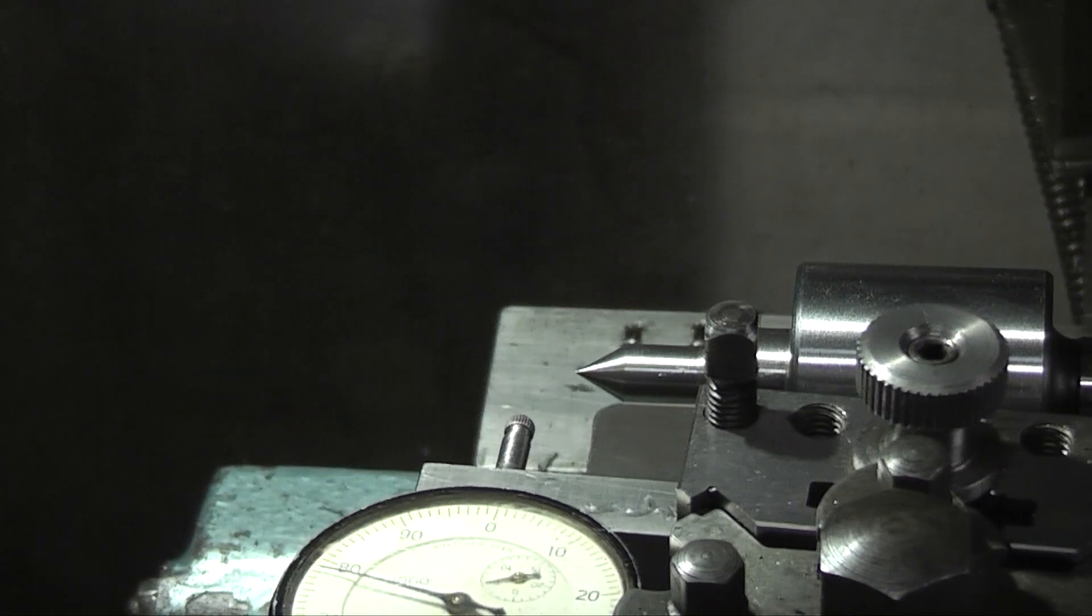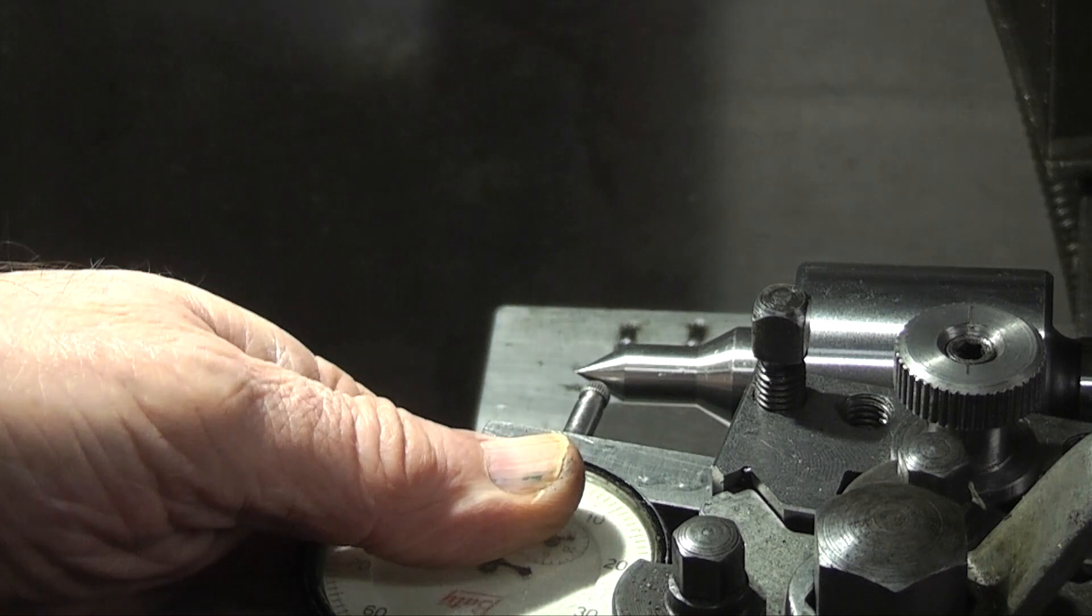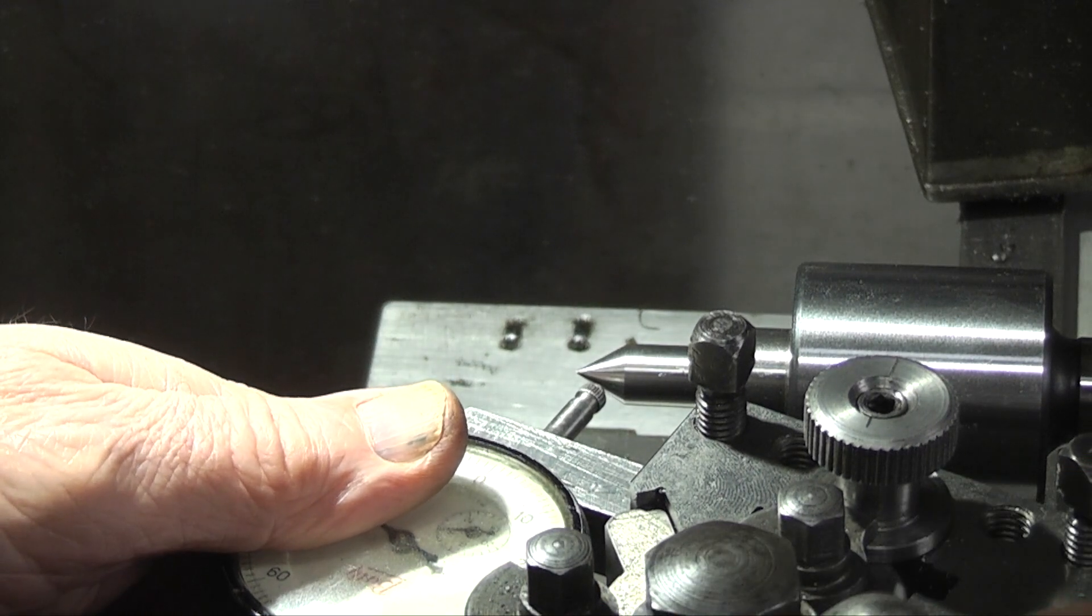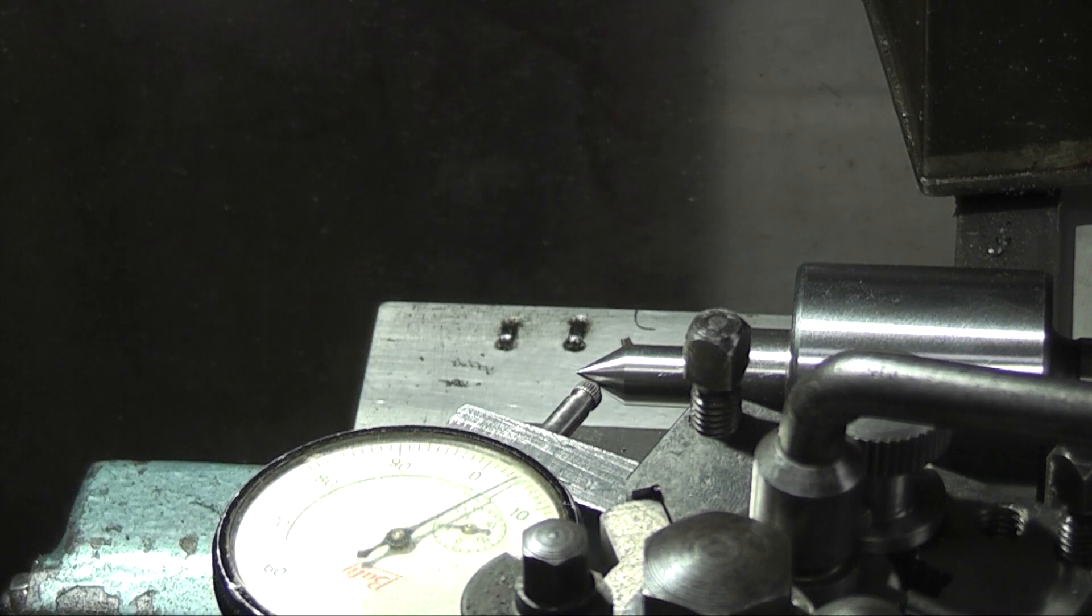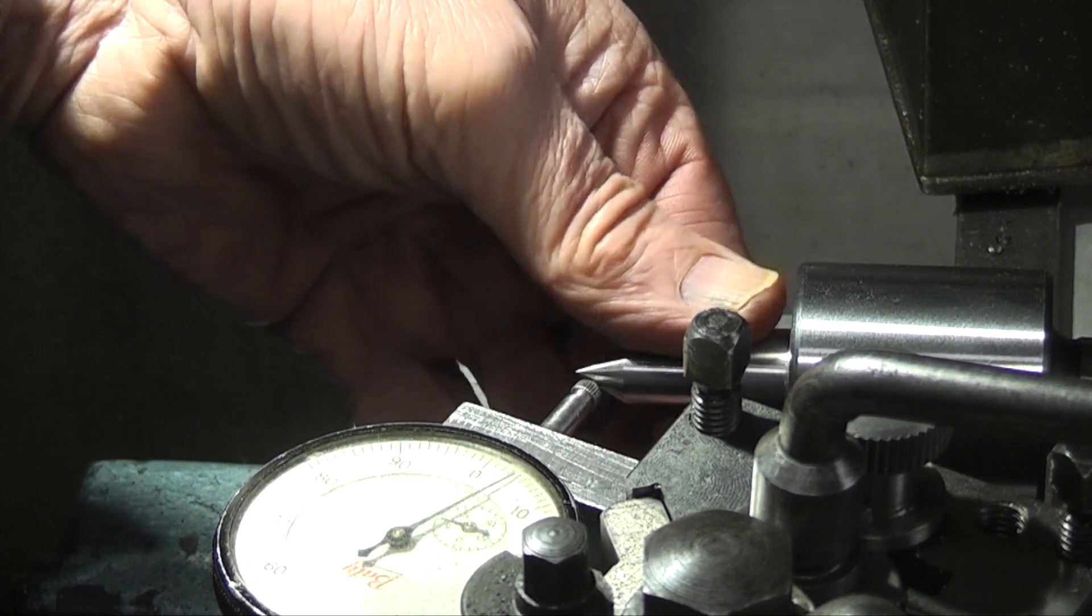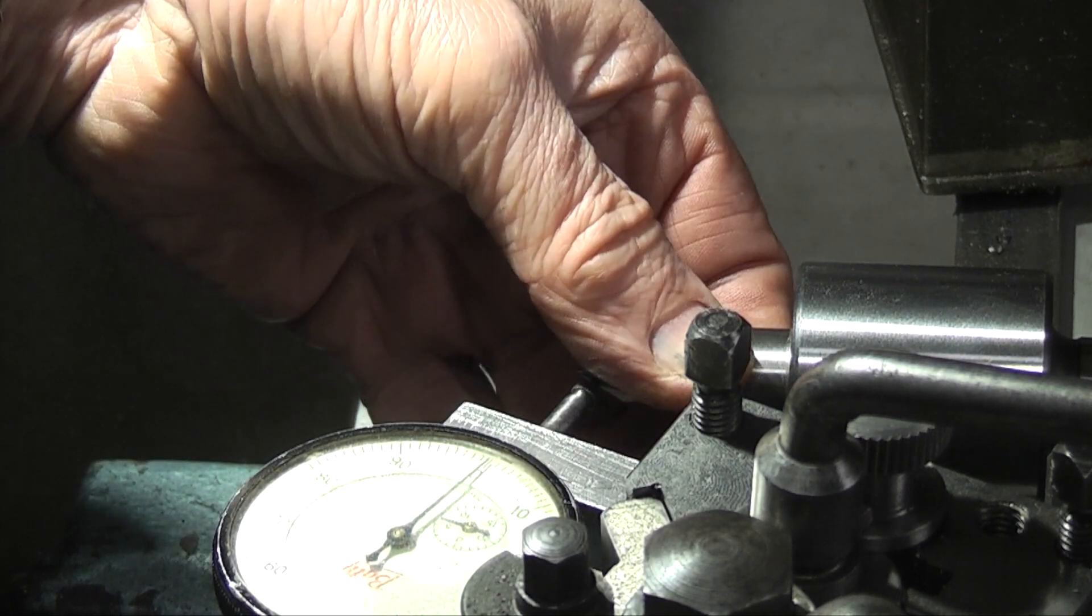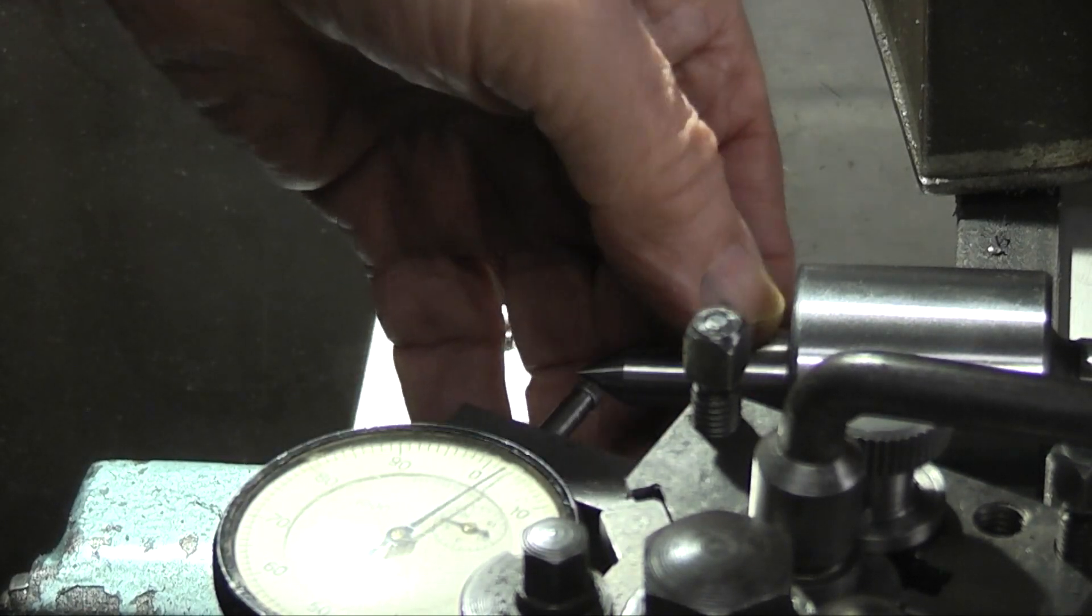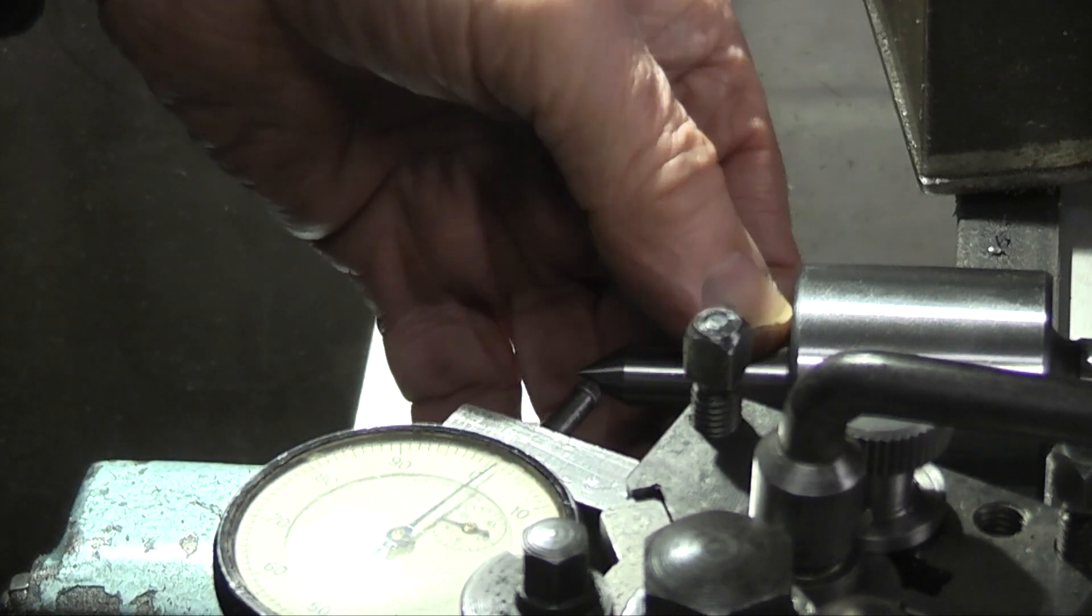Now if you look at the point, the point is the main part that needs to run through as that's in contact with your work piece. The run out on this end is around three tenths of a thou.